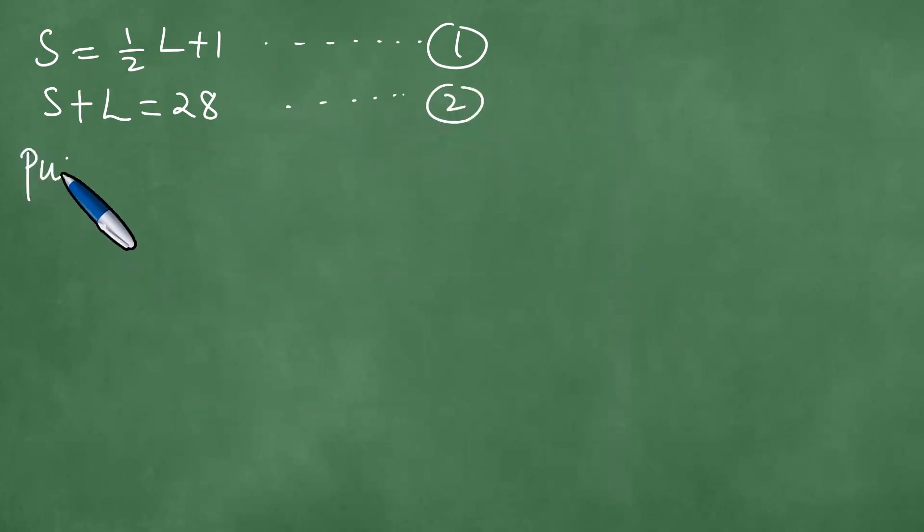And then now you need to say put one into two, which means at this point we have half L plus one plus L. So in the place of S, we put half L plus one, then plus L equals 28 meters. So that we have half L plus L, which is three over two L, which equals 27.